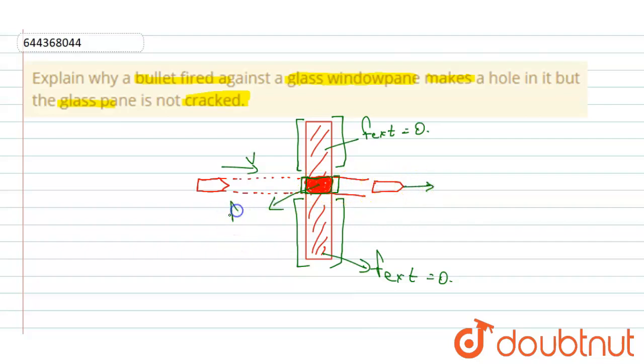So it makes the hole and goes in this direction. So here it experiences some force, let's suppose N Newton force. So this is how the glass window makes a hole in it, but the glass pane is not cracked. That's it. Thank you.